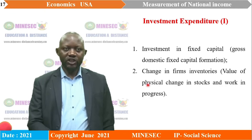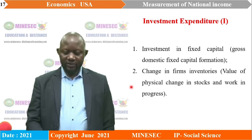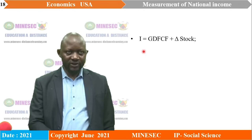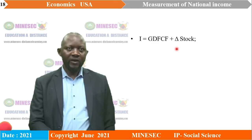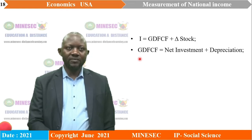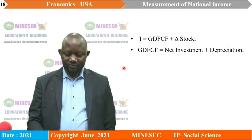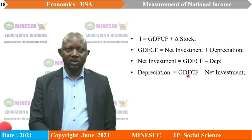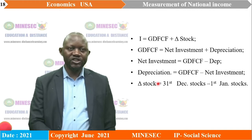Now let's look at the formulas. Total investment (I) equals gross domestic fixed capital formation plus changes in stocks. Gross domestic fixed capital formation equals net investment plus depreciation. Therefore, net investment equals gross domestic fixed capital formation minus depreciation. Changes in stocks equals stocks of 31st December of that year minus stocks of 1st January.